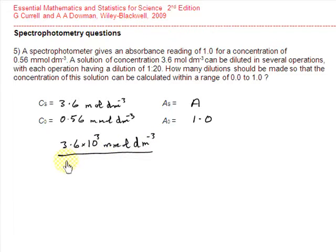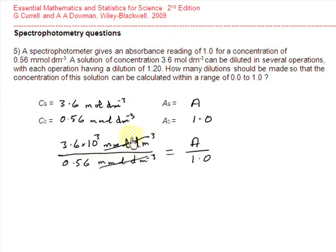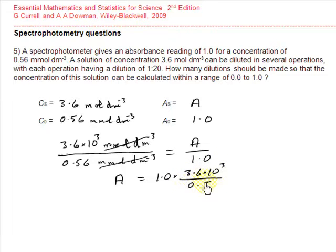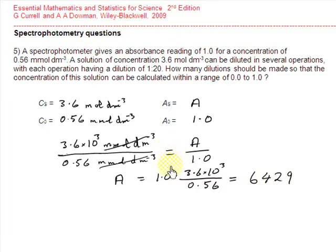With both units now the same, the theoretical absorbance equals 1 times 3.6 × 10³ divided by 0.56, which equals 6429. Clearly this cannot be recorded in a spectrophotometer — it is far outside the measurable range, and at such high concentration the proportionality relationship of Beer's Law would not hold. So the solution must be diluted.